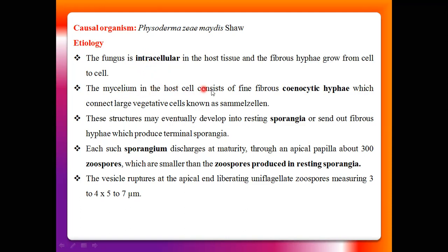This mycelium connects with large vegetative cells known as zoosporangia. They finally produce the asexual spore fruits known as the sporangium. This sporangium generally arises after the germination of the mycelia.